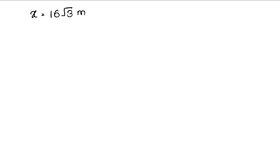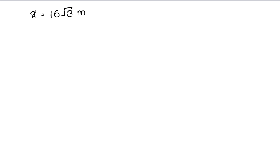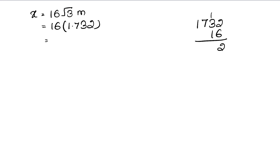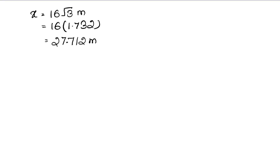Now we put in the value of √3, which is 1.732. So x equals 16 × 1.732. Multiplying 1732 by 16, we get 27.712 meters. So the distance between the ship and the cliff is 27.712 meters.